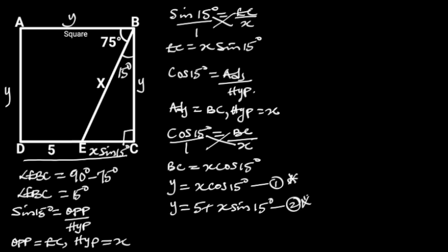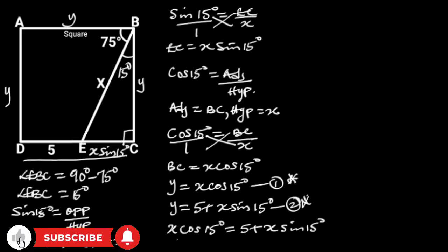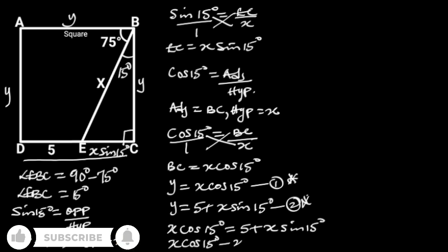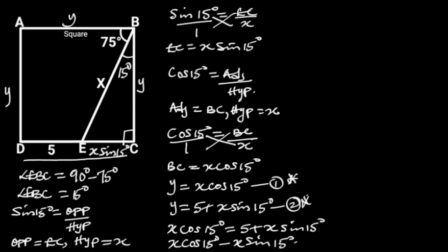Comparing equation 1 and equation 2, observe that the left side of both equations are equal. So we can say that X cos 15 degrees is equal to 5 plus X sine 15 degrees. If we take X sine 15 degrees to the left side, we will have X cos 15 degrees minus X sine 15 degrees is equal to 5. Next, let's factor out X from the terms on the left side, giving us X times (cos 15 degrees minus sine 15 degrees) is equal to 5.